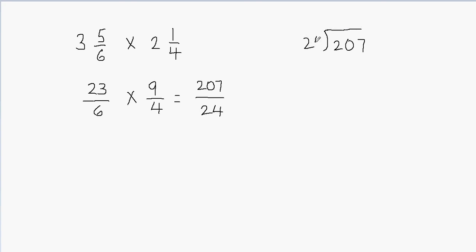207 divided by 24. Now 24 times 8 gives me 192. Then we can just go ahead and subtract: 207 minus 192 is going to give me 15.